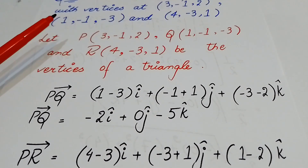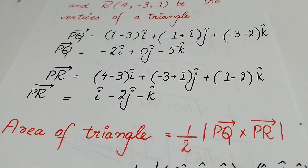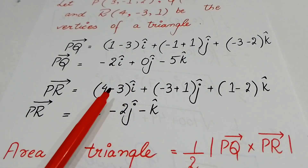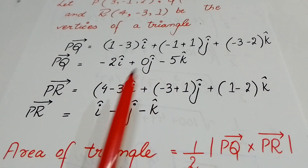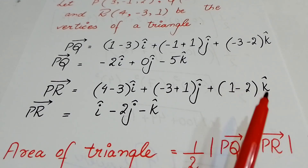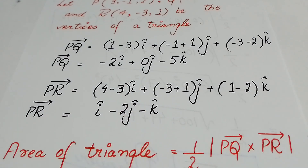In every question, you should have two position vectors. We need to find out the position vector PR. So R minus P gives us: (4-3)i-cap + (-3+1)j-cap + (1-2)k-cap. If I simplify it, the answer is i-cap minus 2j-cap minus k-cap. We now have 2 position vectors, PQ and PR.